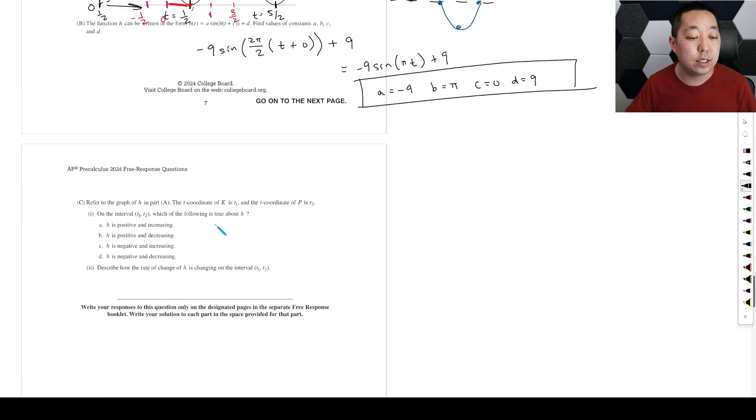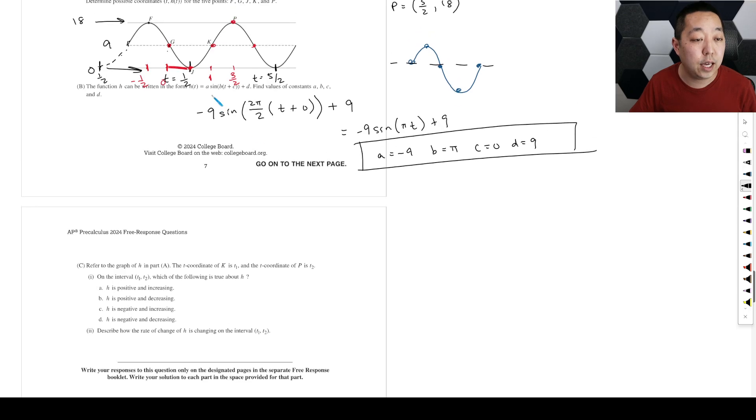Refer to the graph in part a, the T coordinate of K is T one. So that's K. So they're saying this coordinate here is T one. And then the T coordinate, this is T two on the interval, which is fine. True is about H. It is positive and increasing. So a is true. H is positive and decreasing. Increasing means like the Y, the values are getting bigger and bigger and bigger, right? Between here and here. And it's definitely all of these values are positive. So they're all, they're never negative. And then this one's not decreasing. So it's a describe how the rate of change is.